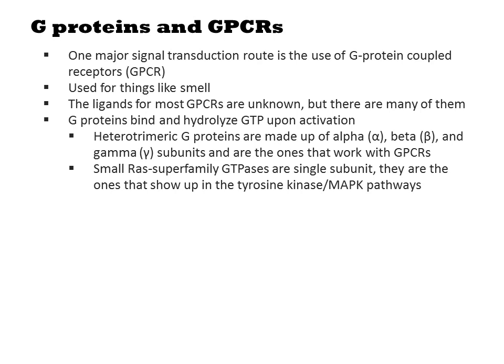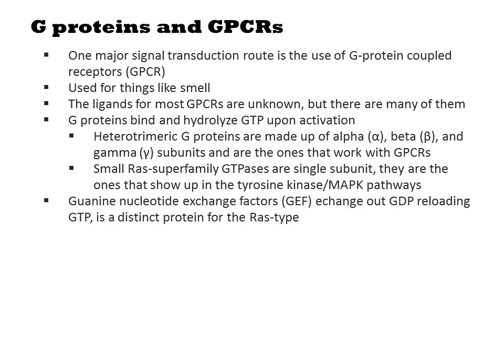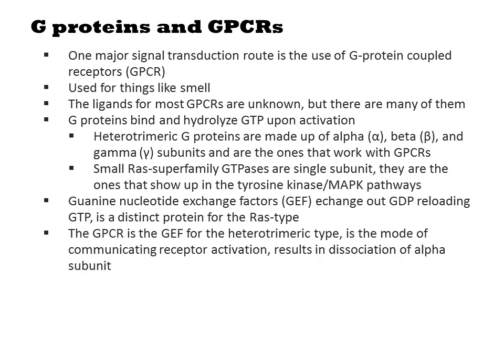There are two types of G-proteins. Heterotrimeric G-proteins are made up of alpha, beta, and gamma subunits, and are the ones that work with the GPCRs. Small RAS superfamily GTPases are single-subunit proteins, and they are the ones that show up in the tyrosine kinase or MAP kinase pathways. For RAS-type G-proteins, guanine nucleotide exchange factors, or GEFs, will exchange out GDP for new GTP molecules. For the heterotrimeric-type G-proteins, the GPCR is itself the GEF.